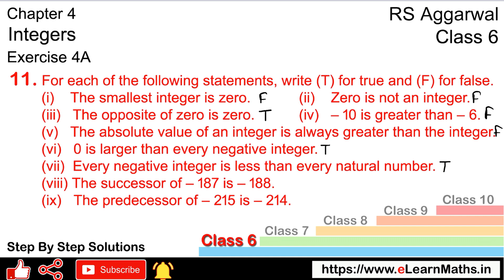Next part: the successor of minus 187 is minus 188. The successor is the next bigger number. What number is bigger than minus 187? It would be minus 186, not minus 188. Hence this statement is false.